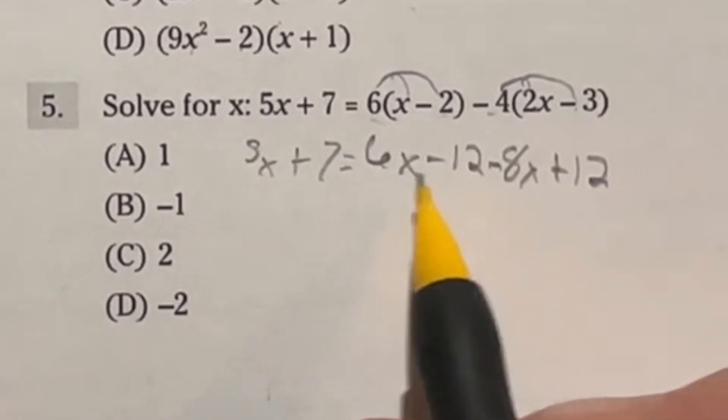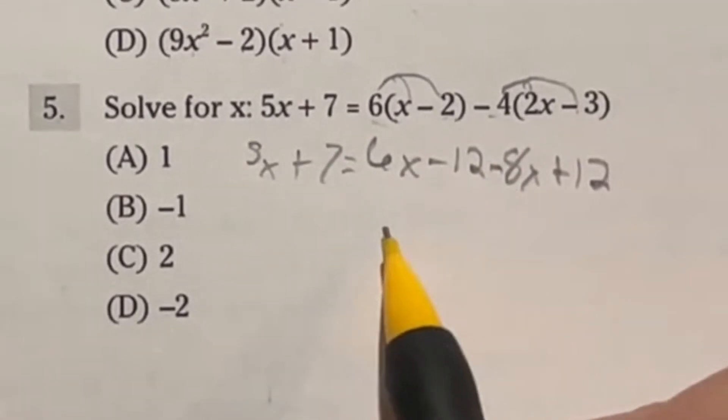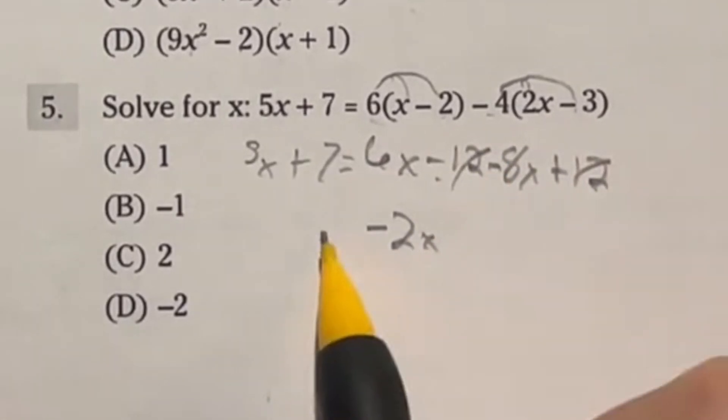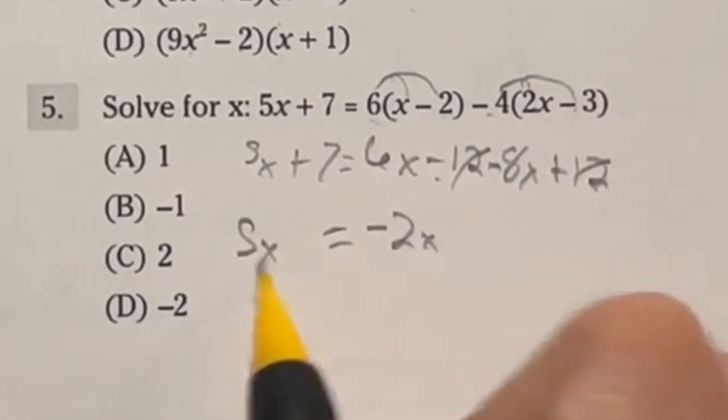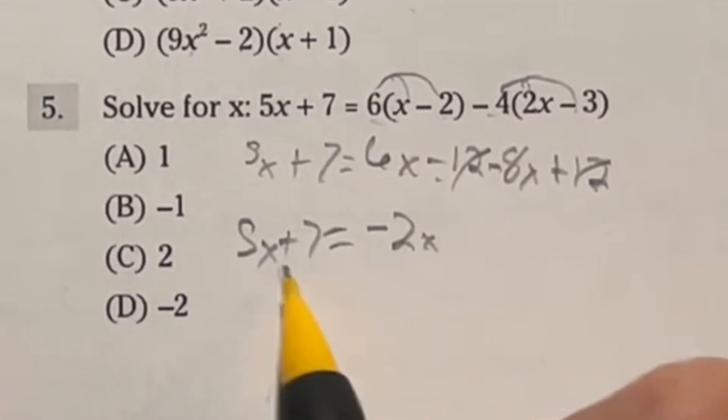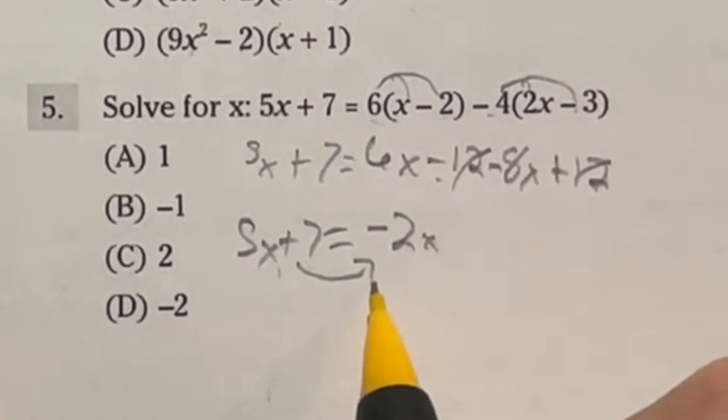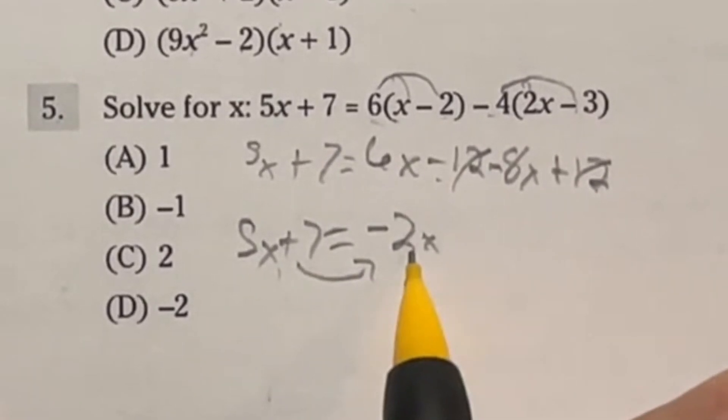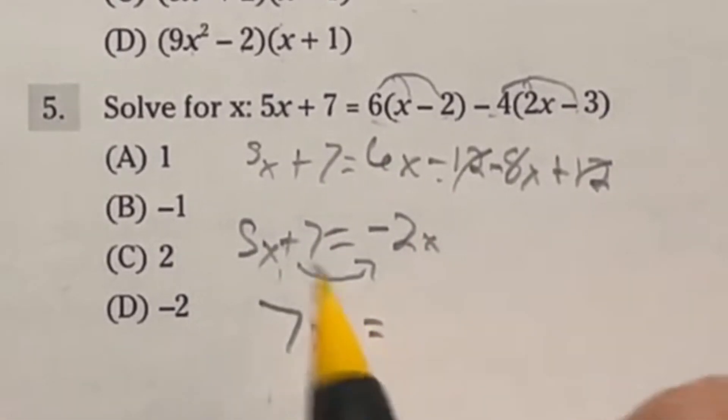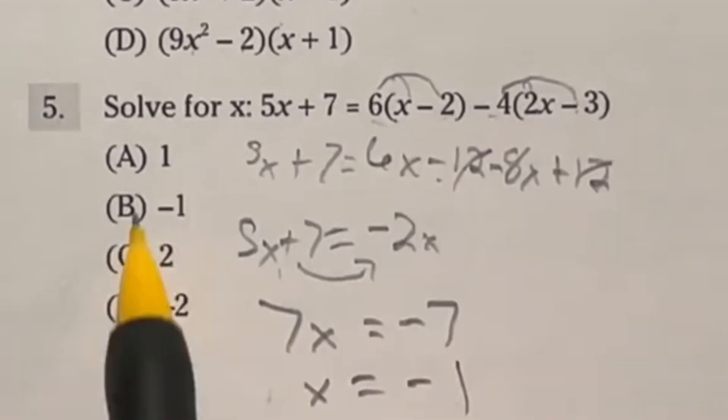Now we still have that 5x plus 7 over here being equal to that whole thing. Let's combine some terms, we got a positive 6x, a negative 8x gives me negative 2x. And we also have a negative 12 and a positive 12 canceling out. We still have our 5x plus 7 over here. I'm going to go ahead and move this 2x to the other side and move the 7 to this side. So subtract 7 over there gives us negative 7, adding this over will give us 7x is equal to negative 7, which means x dividing both sides by 7 is going to be equal to negative 1. So our answer here is B.